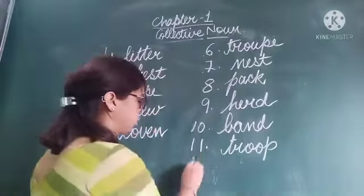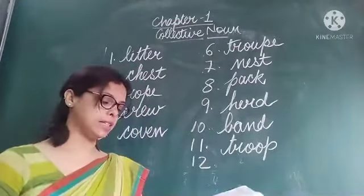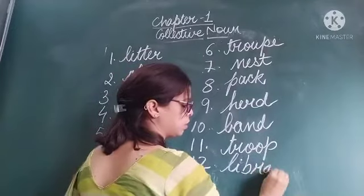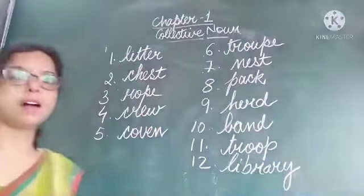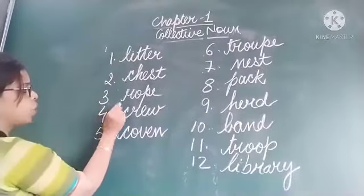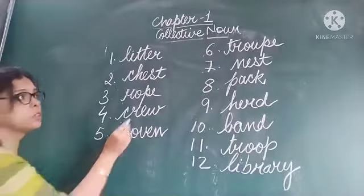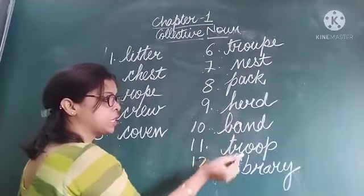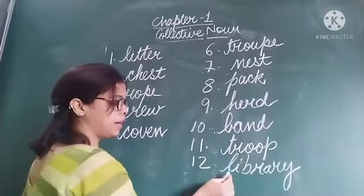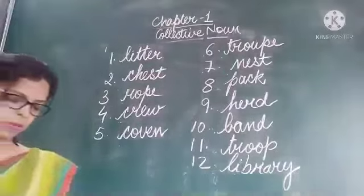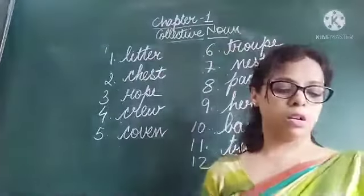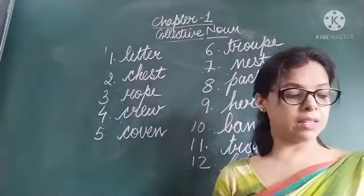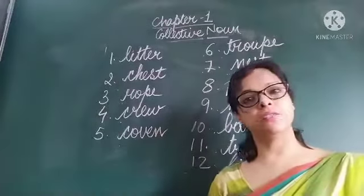Twelfth: our school library has many interesting books — library spelled L-I-B-R-A-R-Y. We will do exercise D in the next class. By now, you have to complete exercises A, B, and C. Thank you.